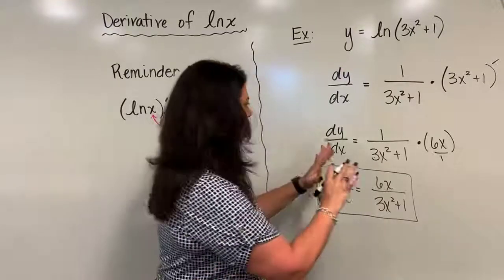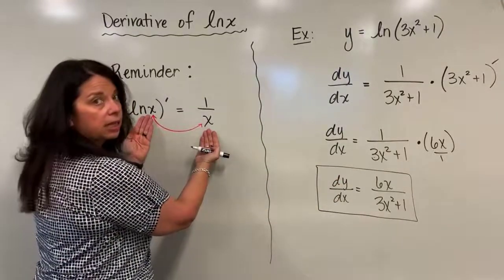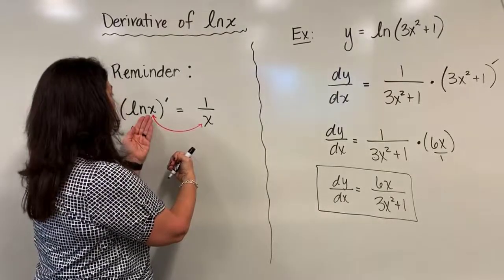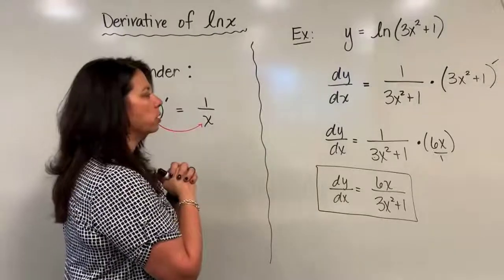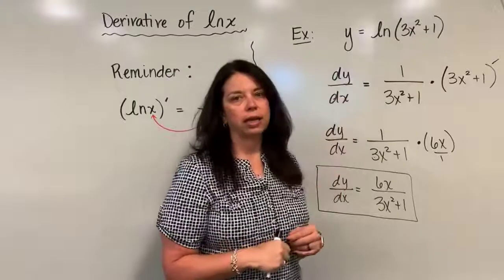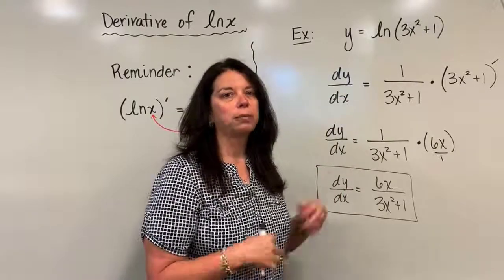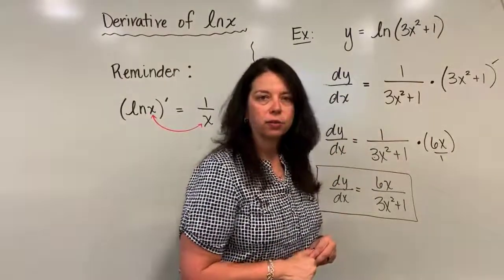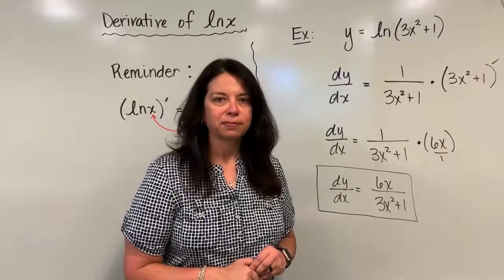So again, just a reminder: be very careful—whatever your argument here in your function is after natural log must match in your denominator. And don't forget, if you have a chain rule problem, you've got to multiply by the derivative of that second part. Thank you.